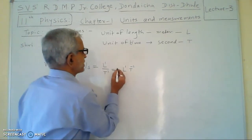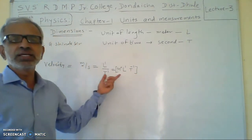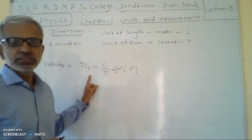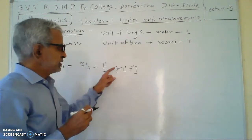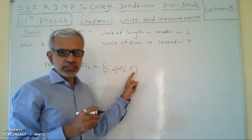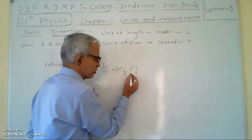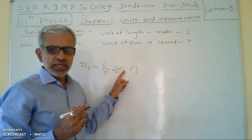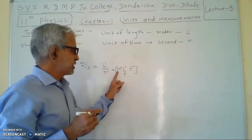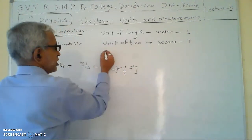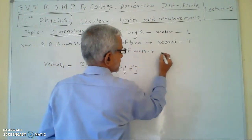The power of mass is zero, because mass does not appear in the unit of velocity. The mass is denoted by M, with power zero. Length is denoted by L and time by T, each with their respective powers.